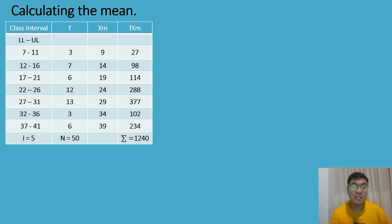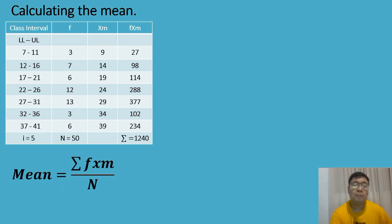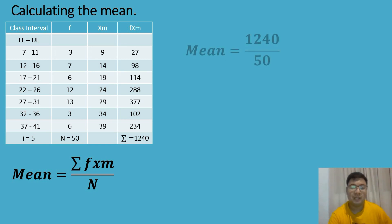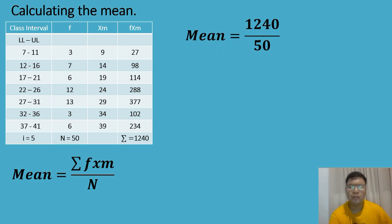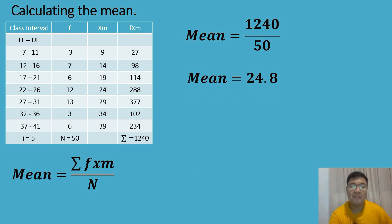Filling up the frequency distribution table has already been discussed in our last video, so I will not be discussing this one. So let us now proceed to the formula of the mean. We use the formula: mean is equal to the summation of frequency times the midpoint, all over the total number of frequency. So mean will be equal to 1,240 all over 50, which gives us 24.8. So the average score of G10 Pythagoras is equal to 24.8.